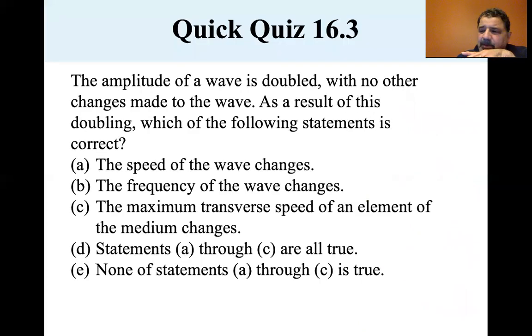Okay. Let's see the amplitude of wave. Let me make sure I'm at the right spot. The amplitude of a wave is doubled with no other changes made to the wave. As a result of this doubling, which of the following statements is correct? The speed of the wave changes, the frequency of the wave changes. It says the amplitude is doubled. The maximum transverse speed of an element of the medium changes. Statements A through C are all true or none of the statements are true. Well, it is only the C, the maximum transverse speed of an element of the medium changes. In other words, how fast it goes up and down is the only thing that changes.